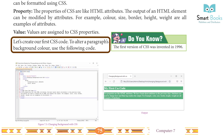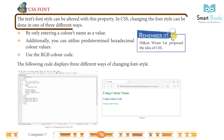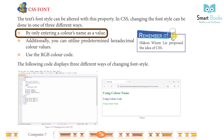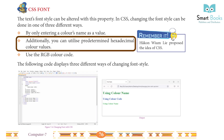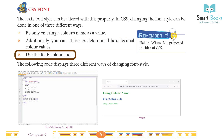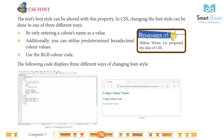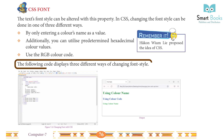Let's create our first CSS code. To alter a paragraph's background color, use the following code. CSS font: the text font style can be altered with this property in CSS. Changing the font style can be done in one of three different ways: by only entering a color's name as a value, by using predetermined hexadecimal color values, or by using the RGB color code.